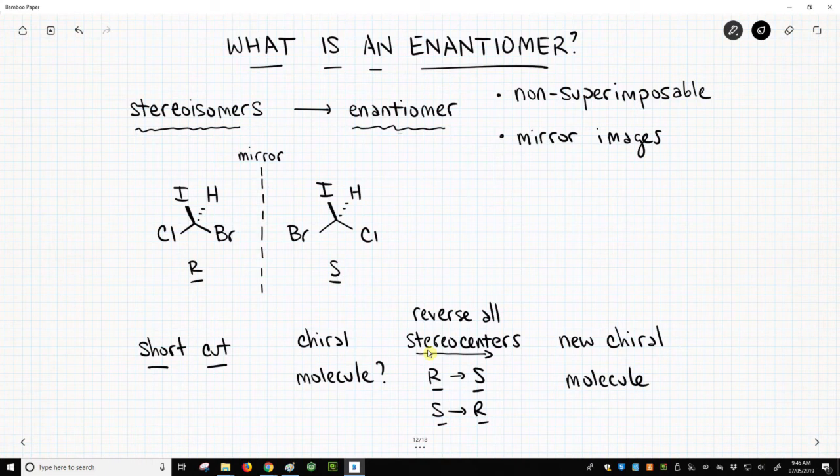Now the rules for an enantiomer. The two molecules you're comparing, for them to be enantiomers of each other, that type of stereoisomer, they need to be non-superimposable. So non-superimposable sounds really fancy, but really what it means is they are not the same. They are not identical.